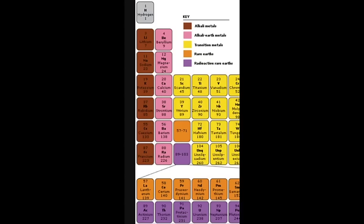These are the first column of the periodic table. The alkali metals are lithium, sodium, potassium, rubidium, cesium, and francium.